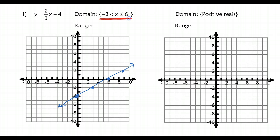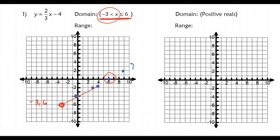Now we're saying I only want to see the part of the graph where it's between negative 3 and 6. When x equals negative 3, this point appears on that graph, so at negative 3, I want to have an open circle. It's not exactly at negative 3, so I place an open circle there. Instead of going past 6 with an arrow showing the line going forever, once we get to x equals 6, we're stopping and we're going to have a closed circle there as well.